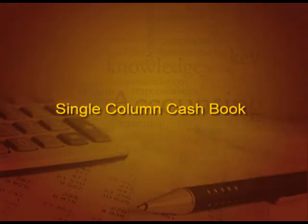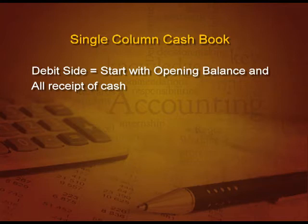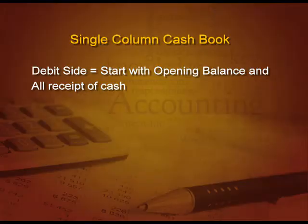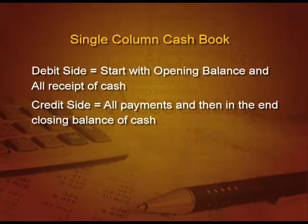Now let us discuss the single column cash book in detail. It starts with the debit side, and in the first point we write opening balance of cash. We record opening balance of cash and then all the receipts of cash, whether it is by cash sale of goods or by cash sale of furniture — all things in which we receive cash are recorded on the debit side. On the credit side, all the payments, whether related to goods, expenses, assets, or anything — all payments related to cash will be recorded on the credit side. Then in the end, we finally arrive at the closing balance of cash.